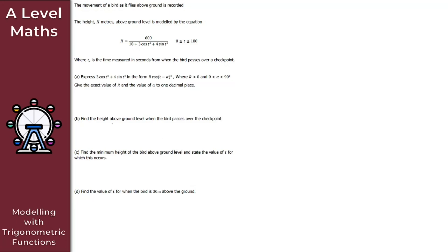For part A, we need to express 3cosT + 4sinT in the form R cos(T − α), where R > 0 and α is between 0 and 90 degrees, giving the exact value of R and the value of α to one decimal place. This is based around the harmonic identities or R formula. We want R cos(T − α).